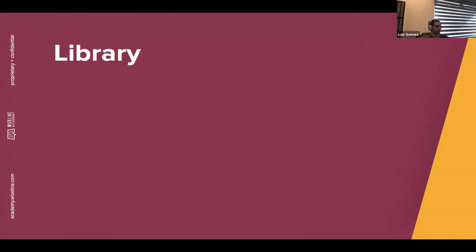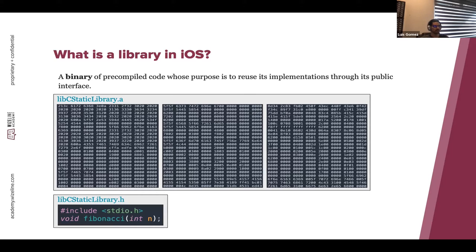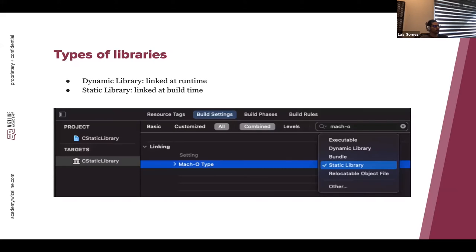So let's start with libraries. First of all, what is a library? A library is a binary of pre-compiled code, like the one you see in the first image — that is actually a real library. If you copy and paste that text in a text editor and save it with an .a extension, you can use that as a real library. I wrote this library in C, and it prints the Fibonacci series. The purpose of a library is to reuse its implementation through its public interface. For a C library, the public interface is a header file — in this case, you just have one method: the Fibonacci.